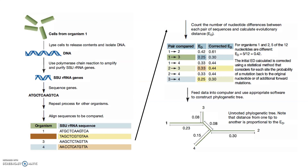The workflow goes like this: you lyse bacterial cells — bust them open — isolate their DNA, and amplify that region of the 16S gene using a reaction called PCR. Once you have that 16S gene amplified, you can sequence it and get the nucleotide sequence — the As, Ts, Cs, and Gs — and repeat that for as many organisms as you want to compare on your phylogenetic tree.